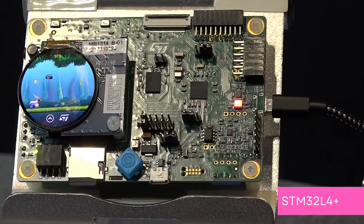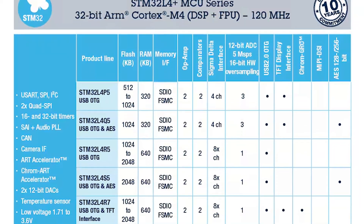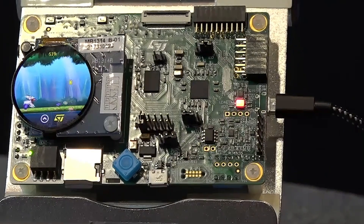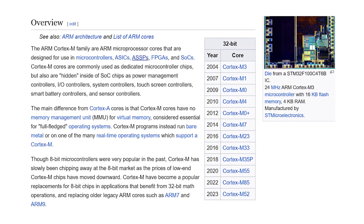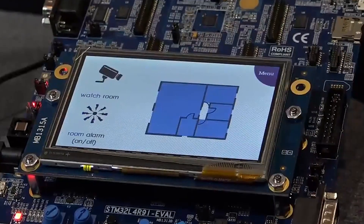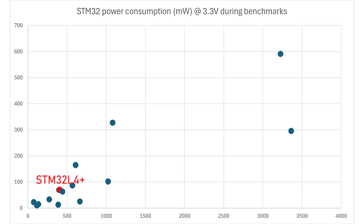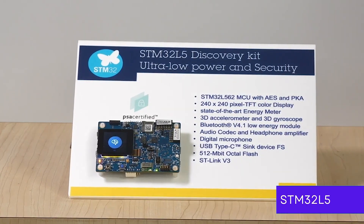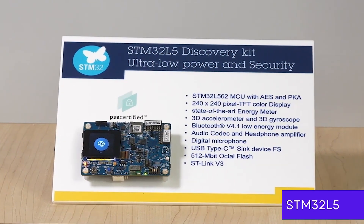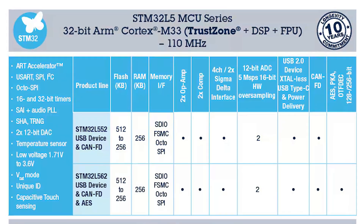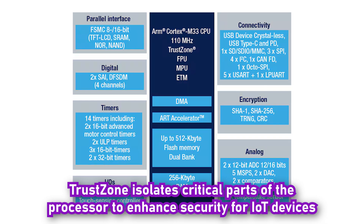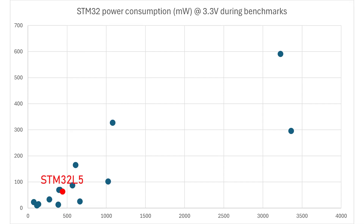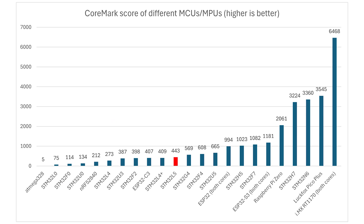The L4 Plus series is more or less similar in application, but has less memory, doesn't have a USB-PD interface, and is also priced a bit lower, with lower power efficiency and an older processor core, the Cortex-M4, which consumes closer to 70mW in benchmarks while delivering scores about 38% lower than that of the U5. Moving on, the STM32L5 series also runs a Cortex-M33 with TrustZone, but it's clocked at a lower speed, has fewer interfaces and memory, and consumes up to 63mW in benchmarks while delivering 8% higher scores than the L4 Plus.